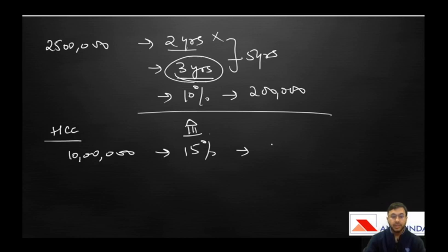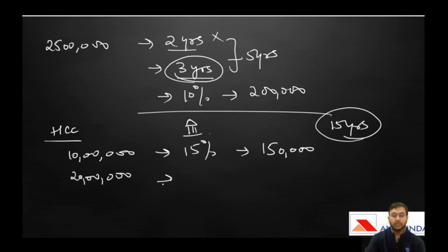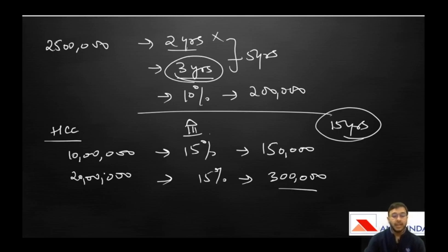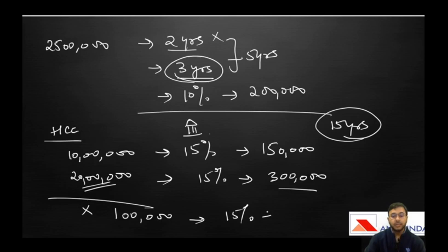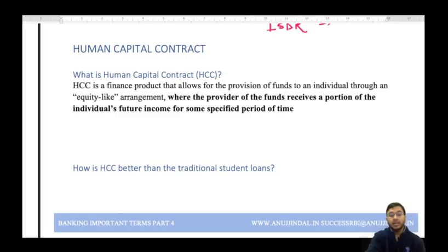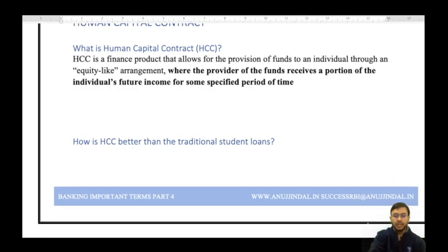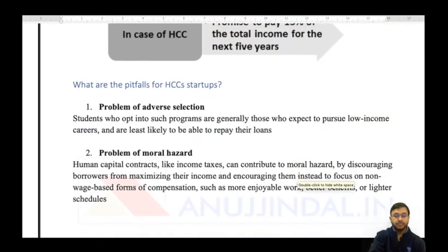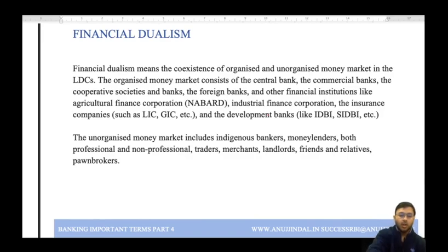If your income increases to 20 lakh after a promotion, the bank gets 15% of 20 lakh, which is 3 lakh. But if another student gets a poor job of 1 lakh per annum, the bank only gets 15,000 per year, putting the bank in a loss. So there is high risk and high return involved. This is called a human capital contract, and it has both advantages and disadvantages.